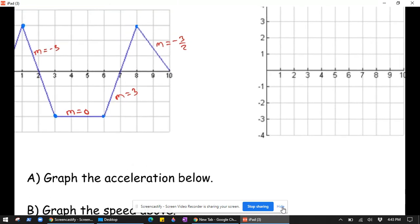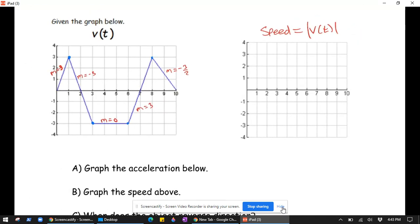It says to graph the speed above. So in graphing the speed, we're graphing the absolute value of the velocity graph, which means to reflect everything over the x-axis. So much of it will stay the same. From 1 to 2, I'm just going to copy down exactly what I see here.